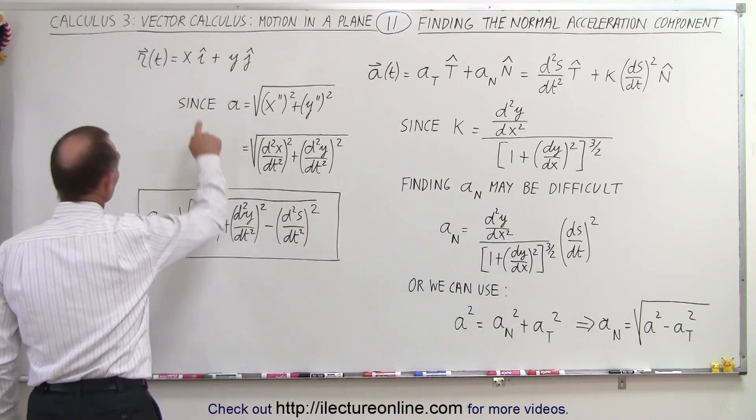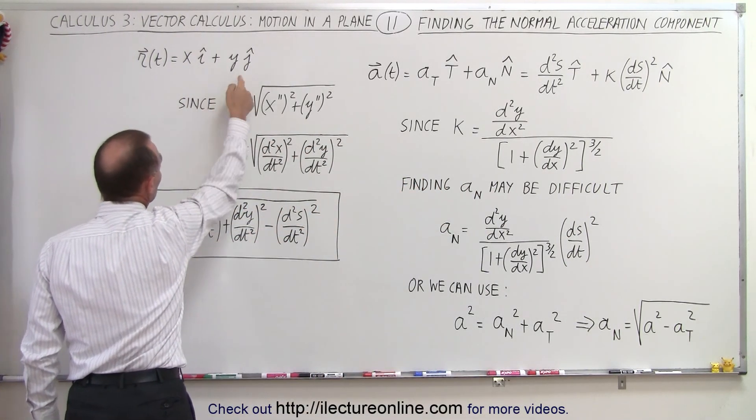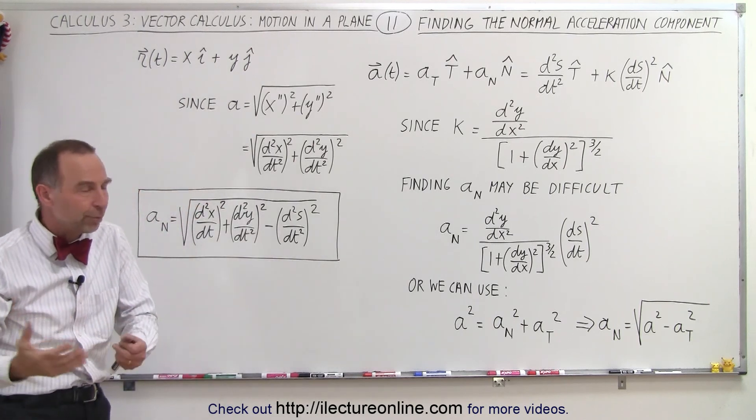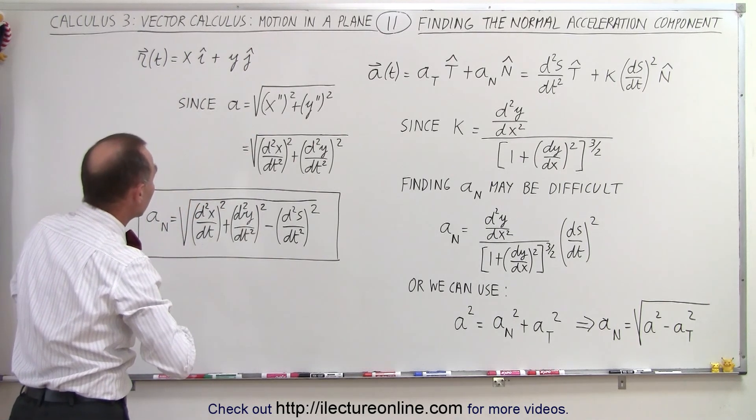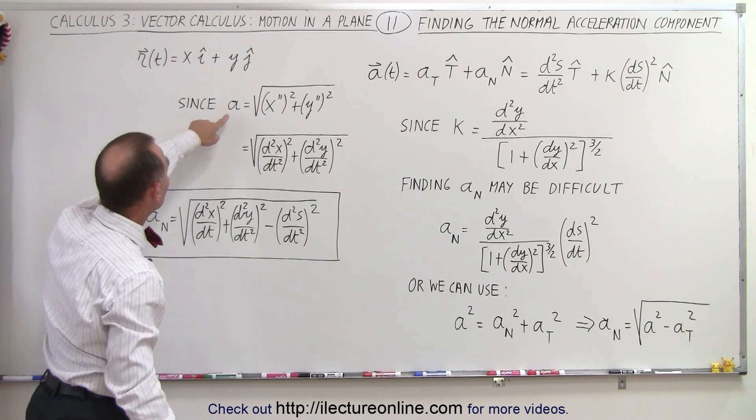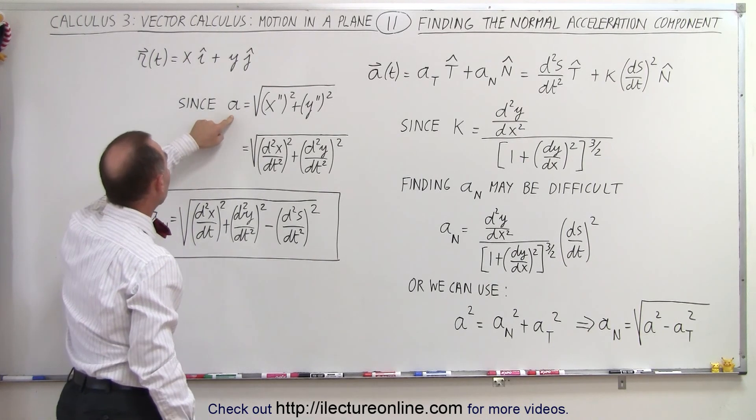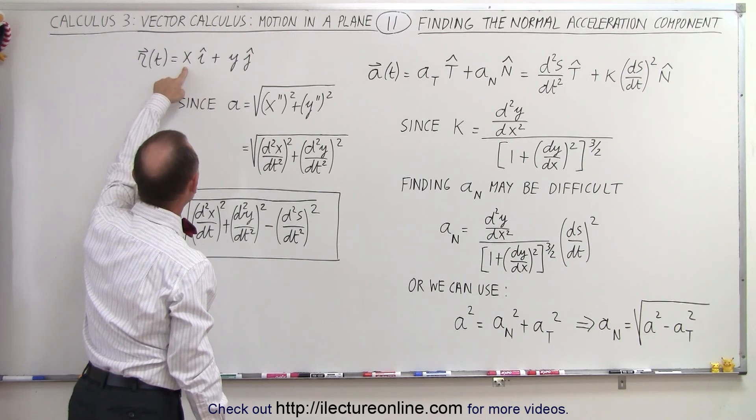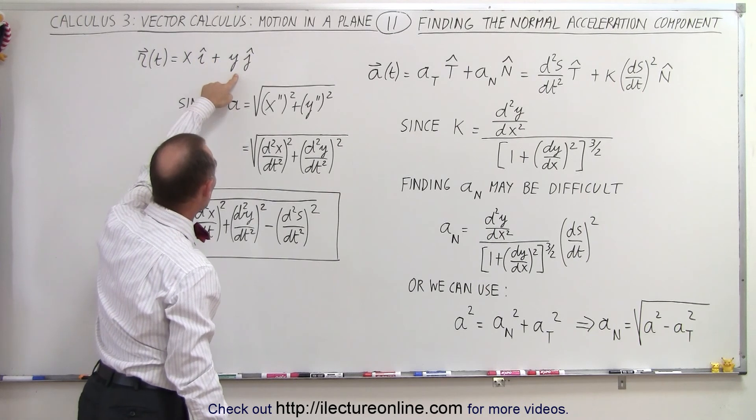And if we start with a position vector which is x in the i-direction plus y in the j-direction, x and y of course being functions of the parametric variable time, then the acceleration can be found by taking the second derivative of the x component, the second derivative of the y component.